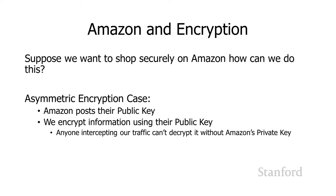So how does asymmetric encryption solve our problem? Very easily. Amazon takes one of their keys, designates it as the public key, and just puts it up on their website — that's what we just saw. When I want to talk to Amazon, I take their public key and encrypt whatever I want to send with it. Anyone intercepting our traffic knows it was encrypted with the public key and also has access to that public key, but the public key doesn't decrypt messages encrypted with it. We need the private key to decrypt the message. As long as Amazon keeps their private key private, I can encrypt messages and send them to Amazon and nobody else can read them.